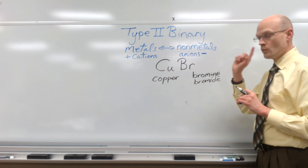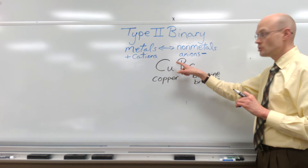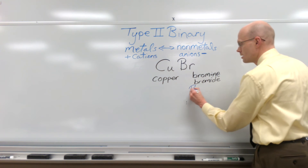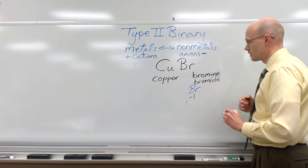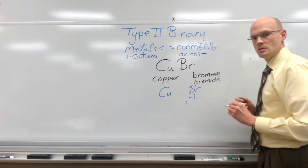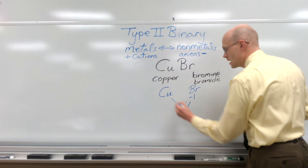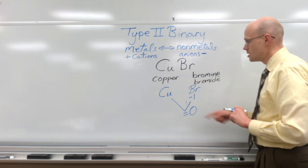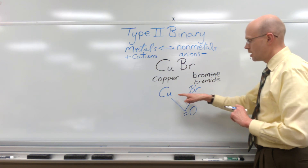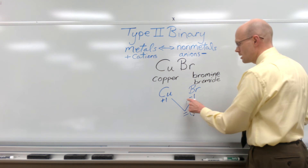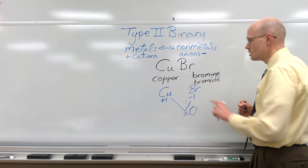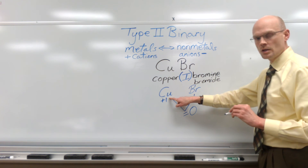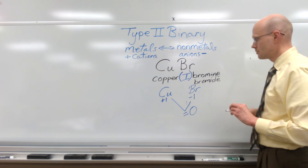We're missing one detail: the label for the copper cation, so we need to determine its charge. Bromine, when it becomes the anion bromide, carries a −1 charge. Copper is a transition metal that may have varying charges, but together the cation and anion must add to zero net charge. This individual copper must be +1, because +1 and −1 equals zero — compounds are charge neutral. So the proper name is copper(I) bromide.